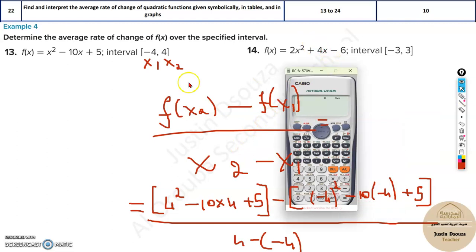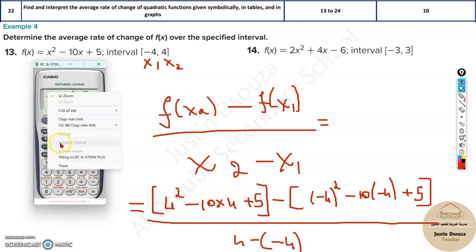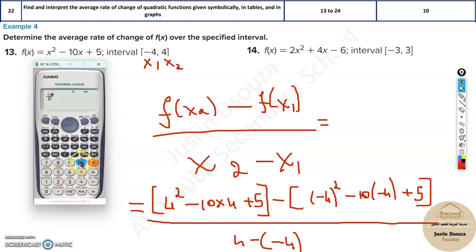Put all of this in the calculator directly. Open the brackets appropriately: 4 squared minus 10 times 4 plus 5, close the bracket, minus, open the bracket again—now there are two brackets open, so one more bracket for minus 4, close the bracket, squared, minus 10 times minus 4, open the bracket, plus 5, close the bracket, divided by 4 minus minus 4, and you will get the answer minus 10.